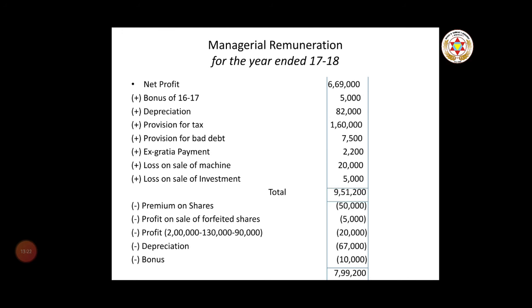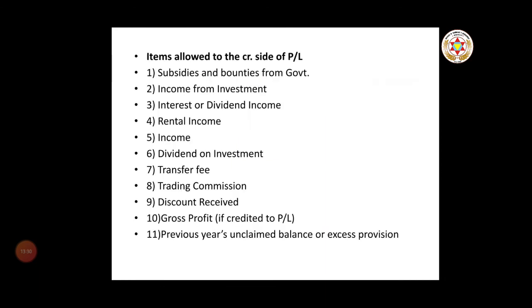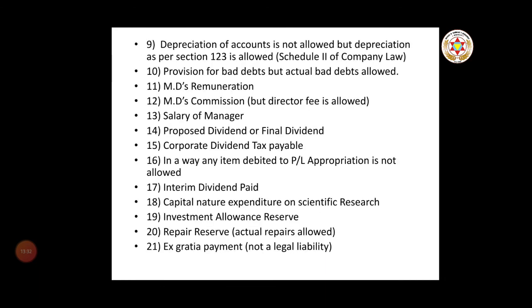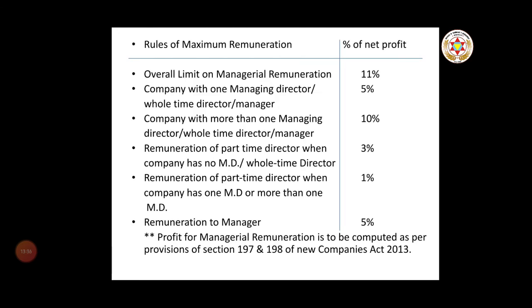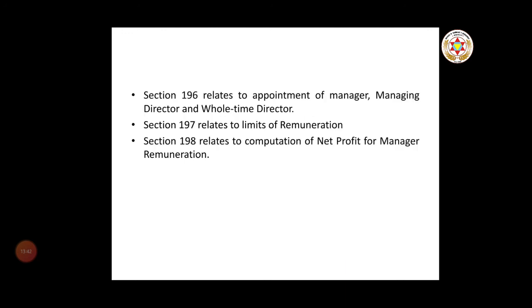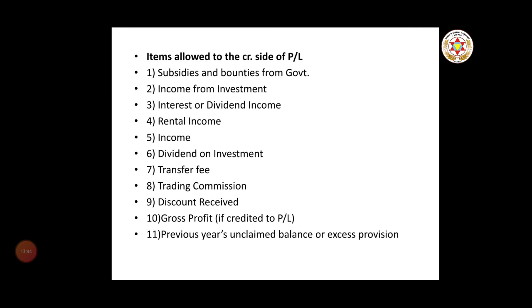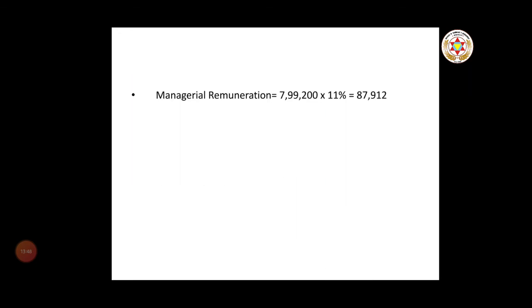Since the question does not specify calculating remuneration for whole-time director, MD, or part-time director separately, we apply the maximum ceiling of 11%. Managerial remuneration = 7,99,200 × 11% = 87,912. This is one of the major concepts in final accounts. That's all for today, thank you.